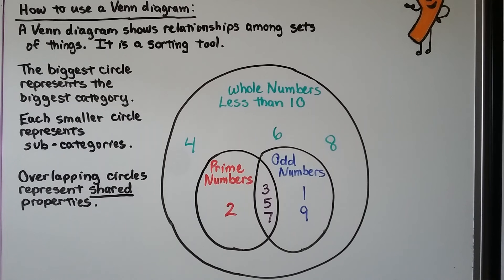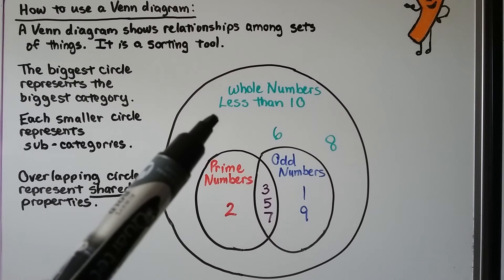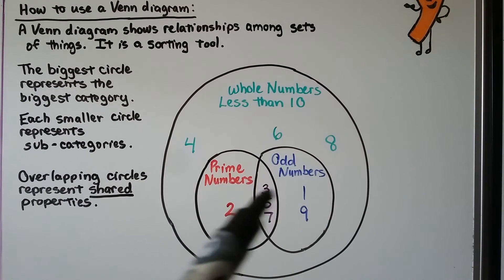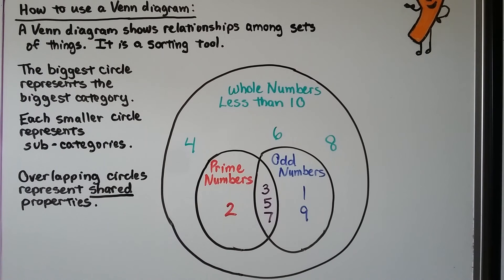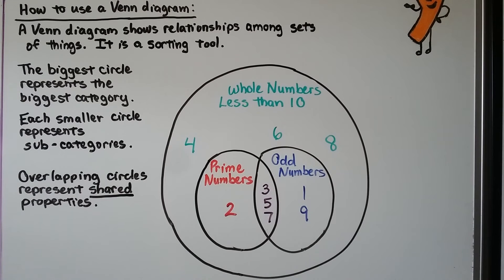A Venn diagram shows relationships among sets of things — it's a sorting tool. The biggest circle represents the biggest category. Each smaller circle represents subcategories, which are categories inside of a category.